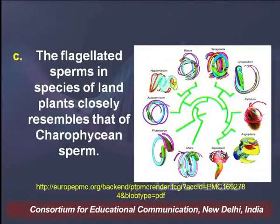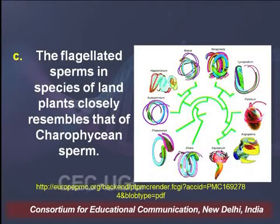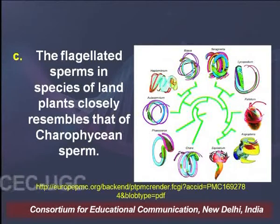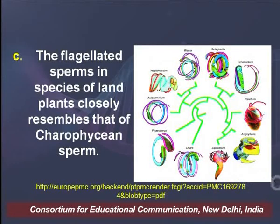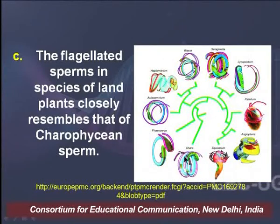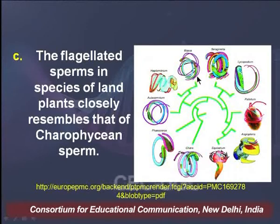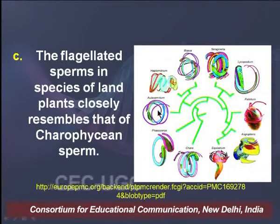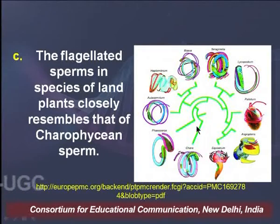We have prepared a cladogram showing different types of flagellated sperm cells. If you observe this cladogram, you will find that at the beginning the flagellated sperm of Chara is placed, and at the other ends there are different types of flagellated sperms found in some of the tracheophytes and some of the bryophytes. This presence of flagellated sperms in these species of land plants closely resembles that of carophyteens sperms.